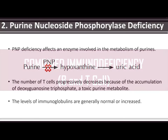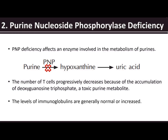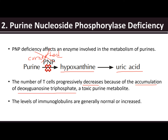Another T cell condition is purine nucleoside phosphorylase (PNP) deficiency. PNP deficiency affects an enzyme involved in purine metabolism. Normally, purine is converted by PNP into hypoxanthine, which then becomes uric acid. But in this deficiency, purine is not converted into hypoxanthine.